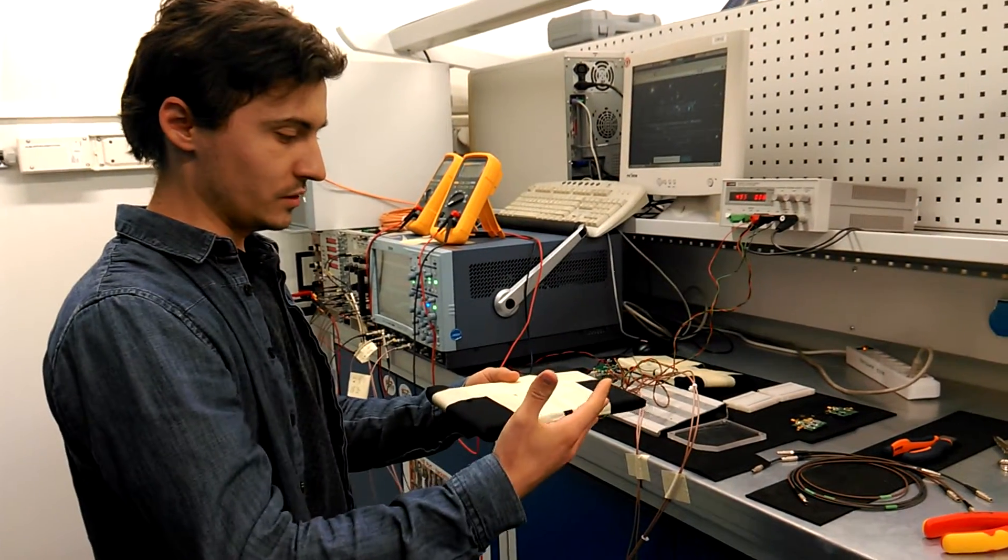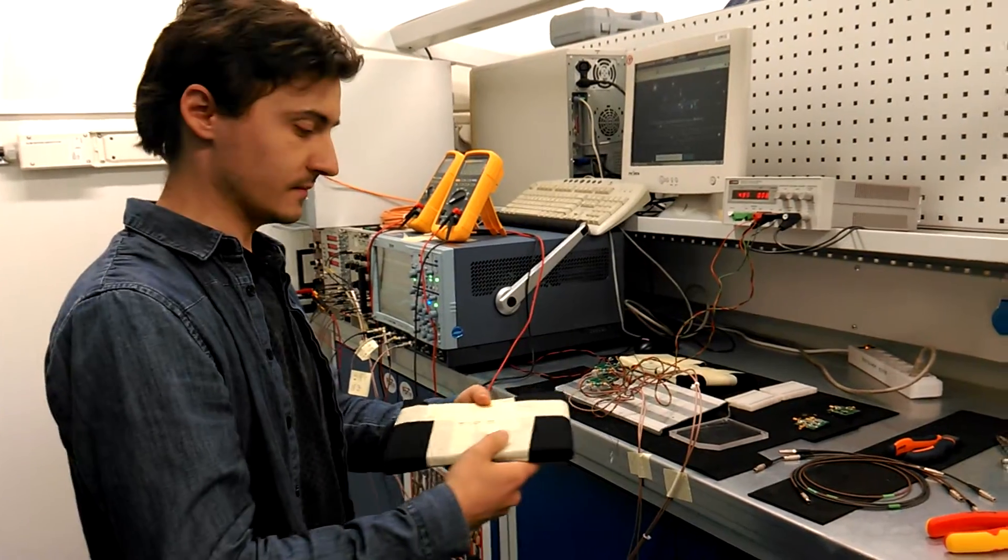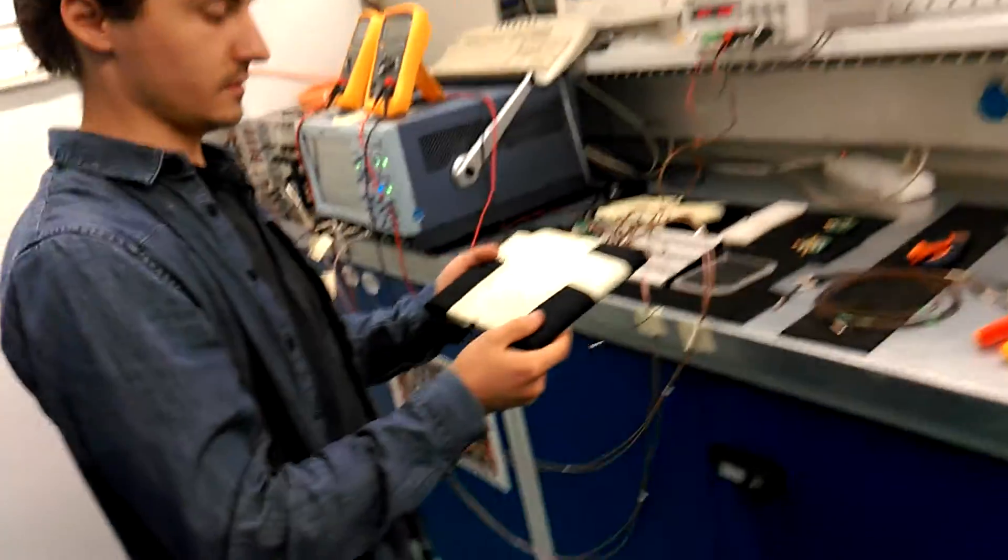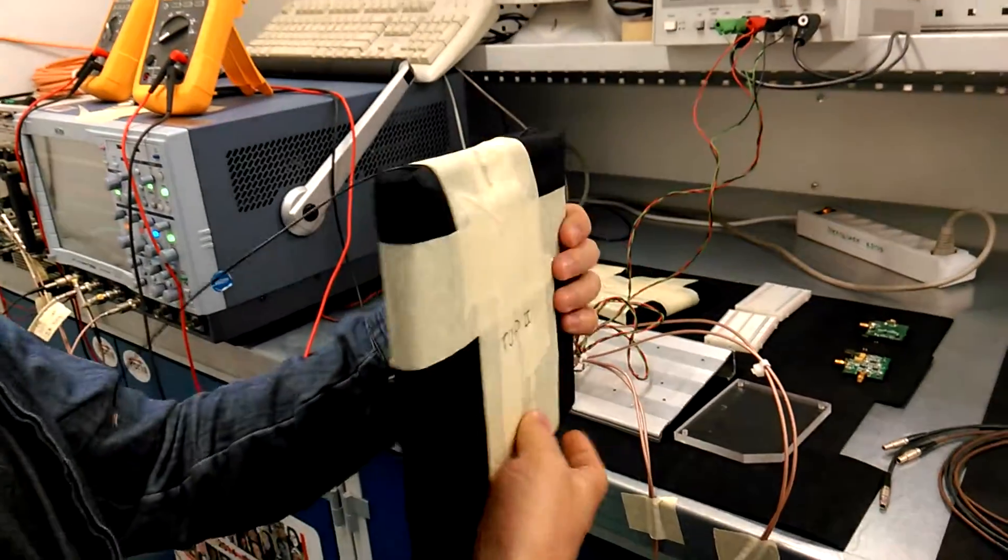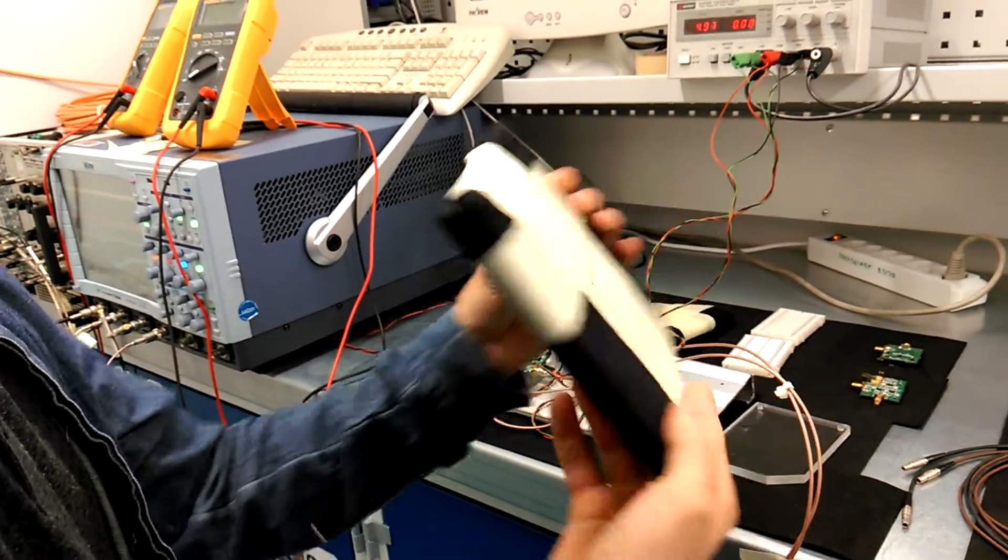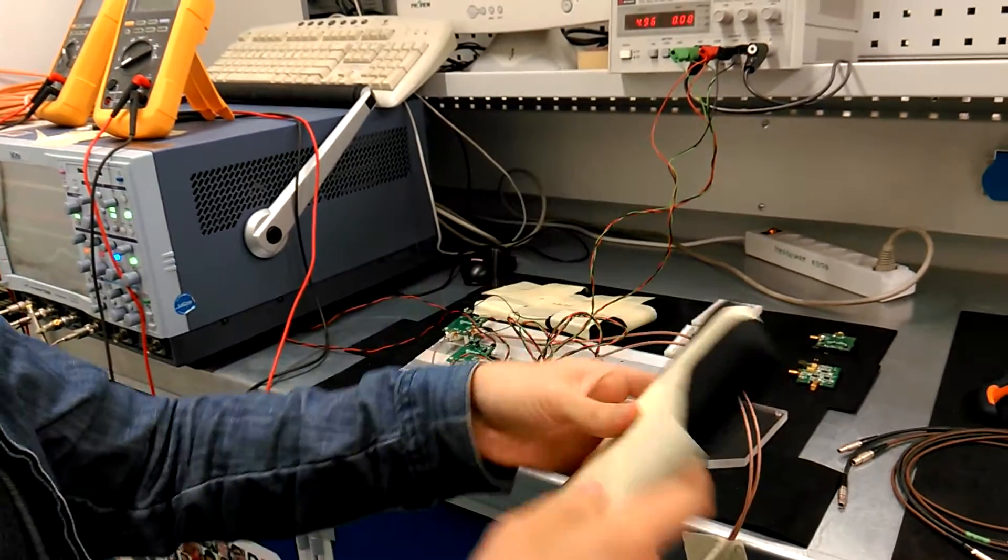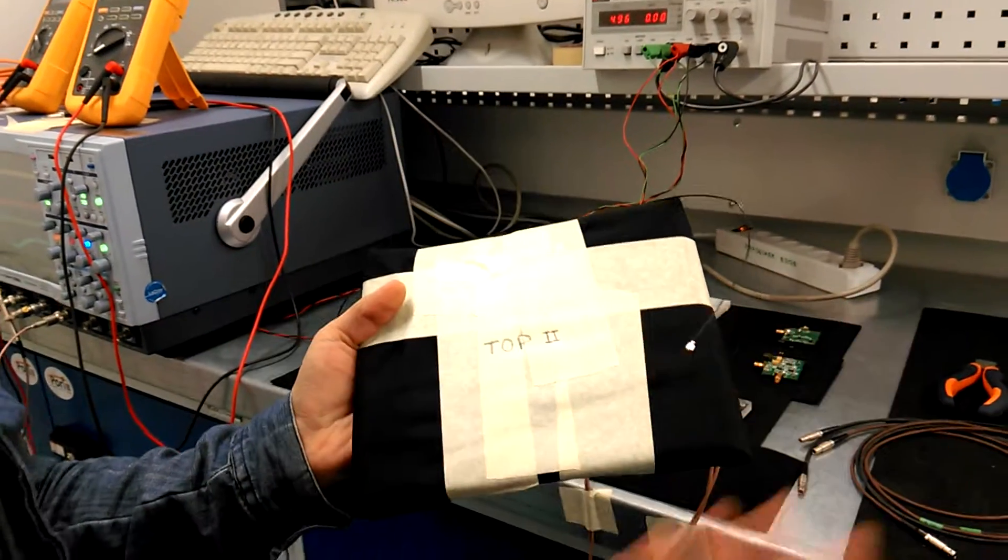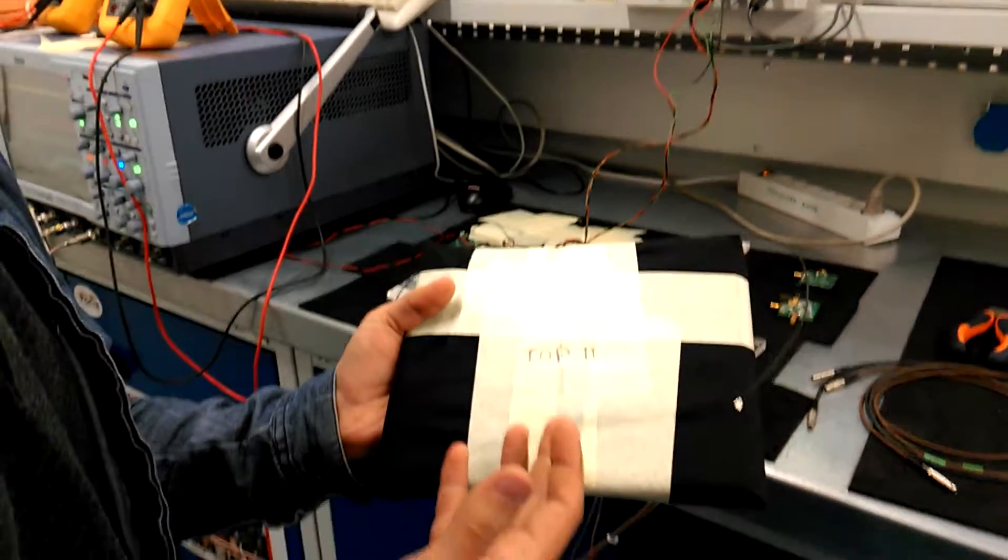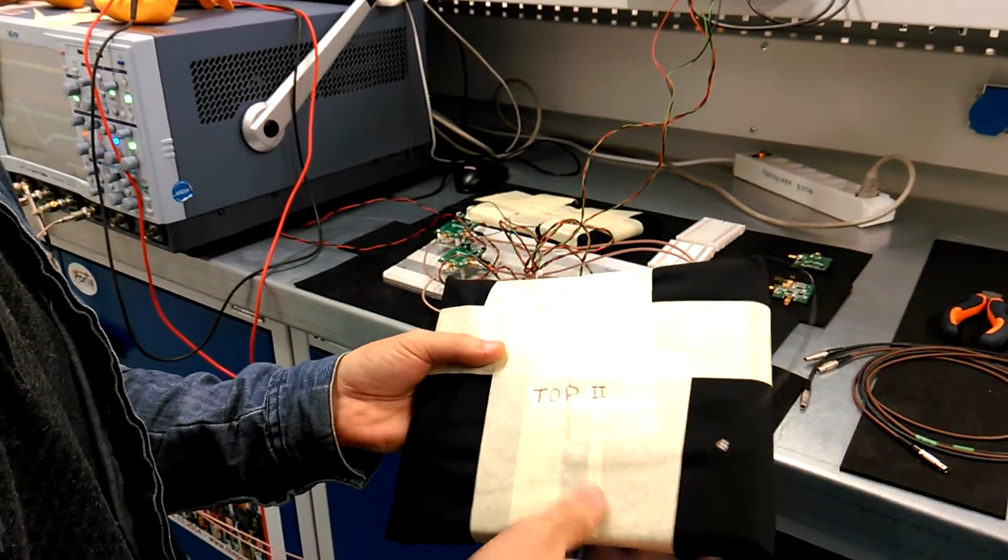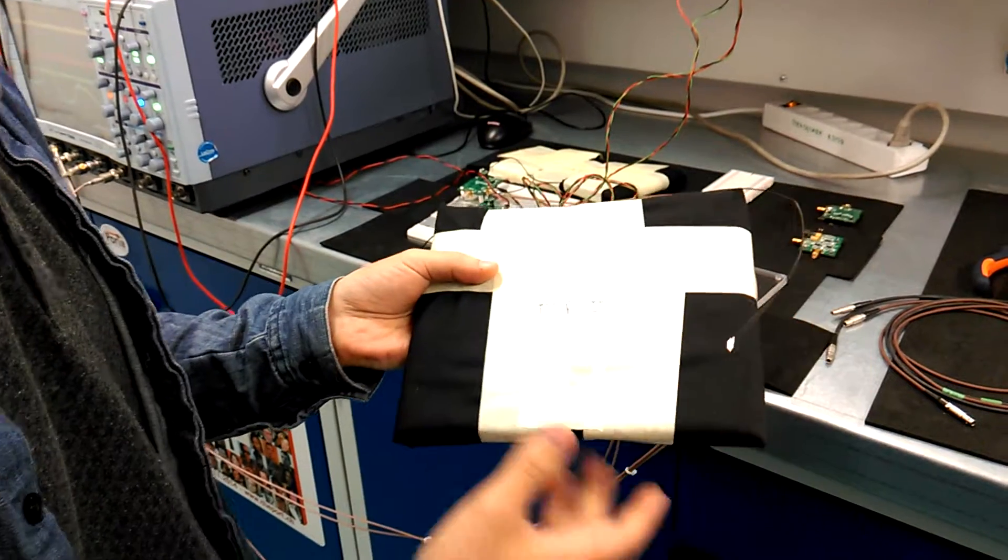That's the thing between your hands. This is a scintillator plate. Inside there is a scintillator. It's wrapped because the scintillator produces light, so it has to be protected from ambient light. Otherwise, we cannot see anything.